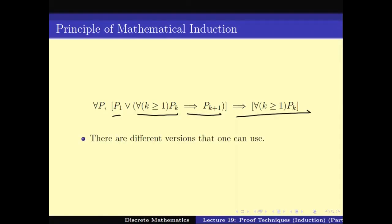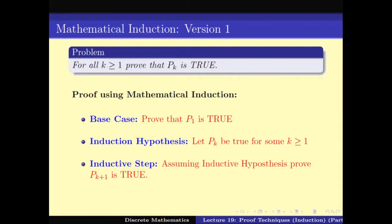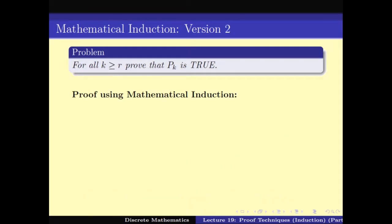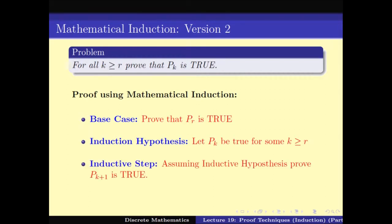Mathematical induction has different versions, and we might be interested in applying one or another. Version 1 is what we just showed: to prove for all k greater than or equal to 1 that Pk is true, prove P1 is true, then assuming Pk is true prove Pk+1 is true. Version 2 is similar except that we shift the base case - if we have to prove the statement is true for k greater than or equal to r, we start with base case Pr, then prove Pk+1 assuming Pk is true.